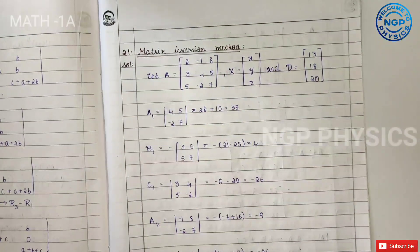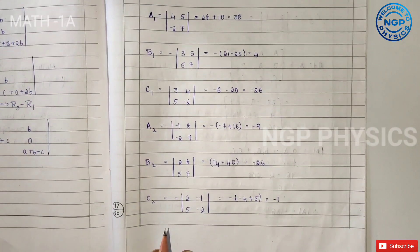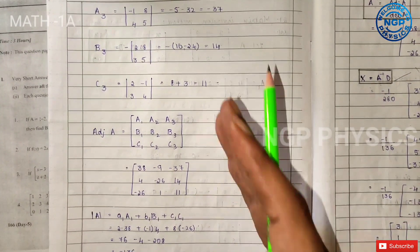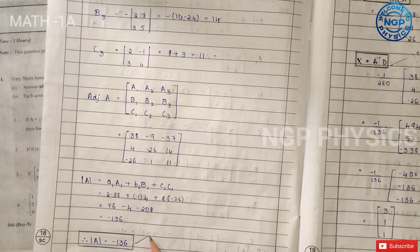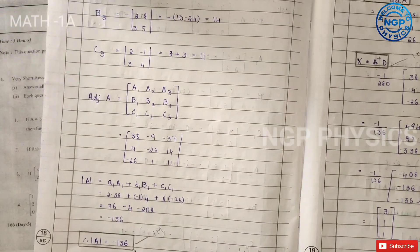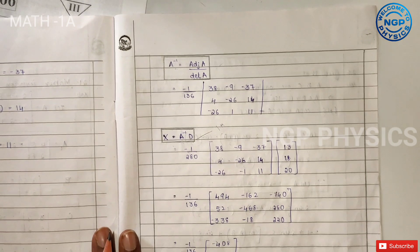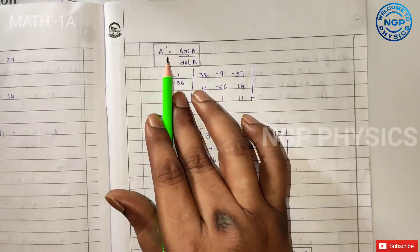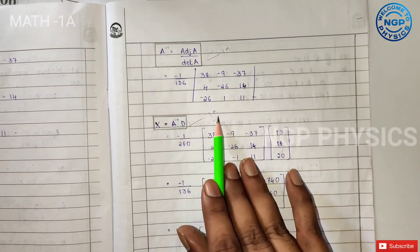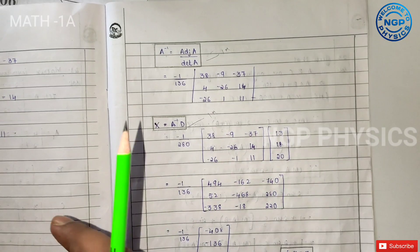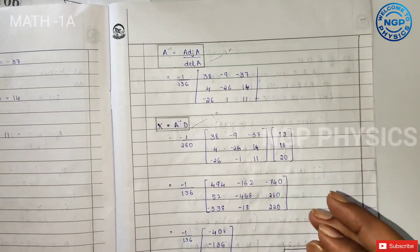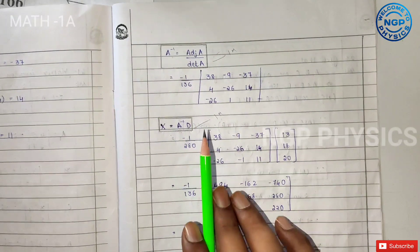Next, the third LAQ. This question is worth 1 mark per step. This involves the matrix investment method. A inverse is equal to adjoint A divided by the determinant — this is 1 mark. Each step carries 1 or 2 marks. Make sure to note every step to get complete marks.